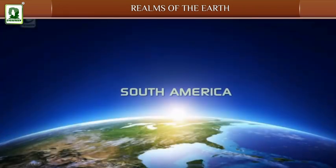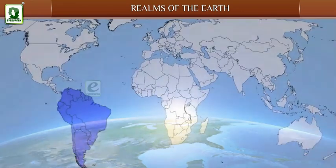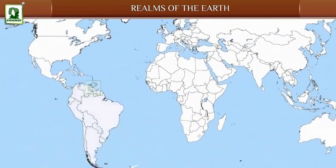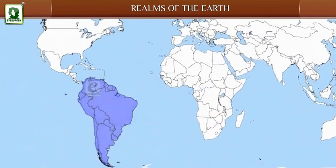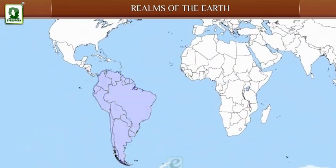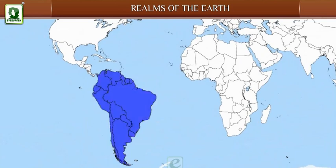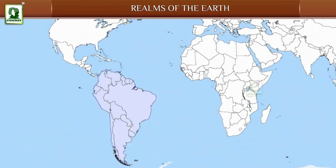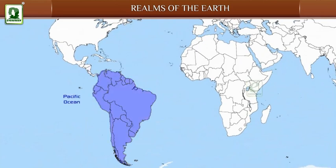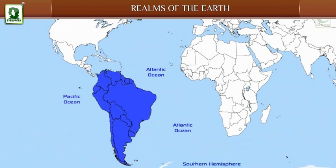South America: South America is ranked fourth in area and fifth in population. It is situated between the Pacific and Atlantic Oceans. Most of its area lies in the southern hemisphere.